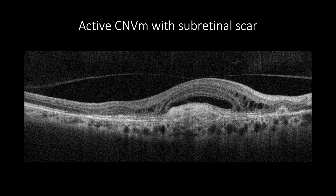OCT shows, in cases of active neovascularization with disciform scar, an existing subretinal scar with subretinal fluids. Please note how the subretinal fluid is forming an open angle, which indicates a sign of chronicity.